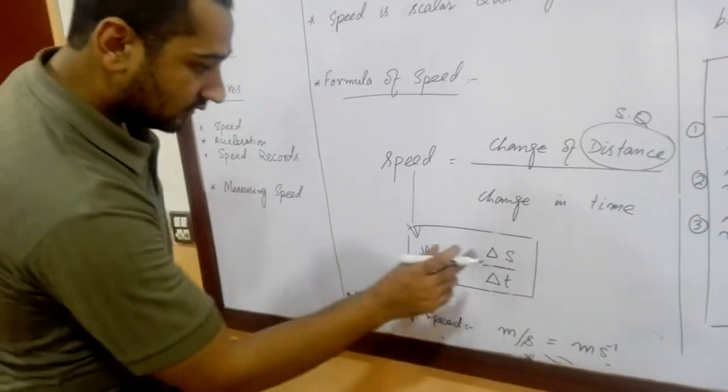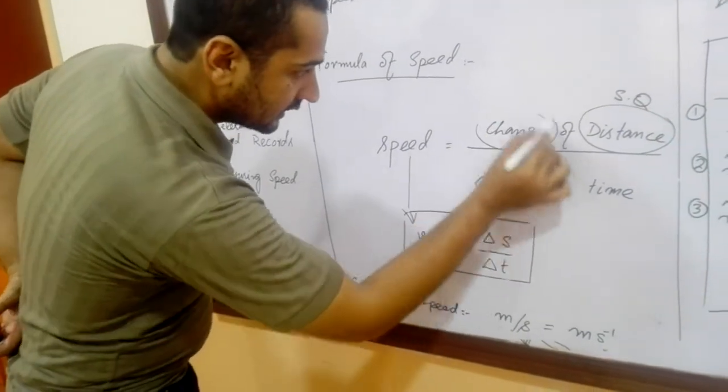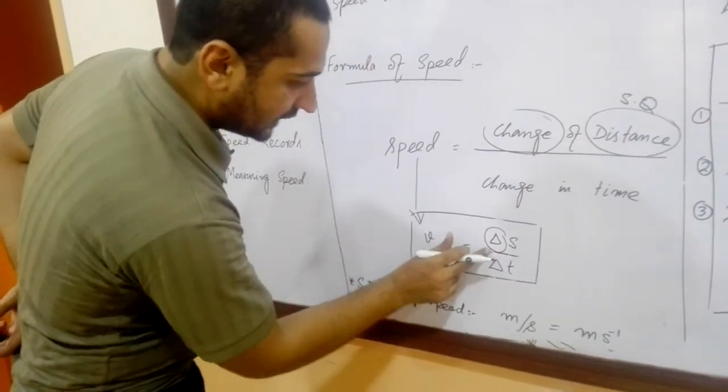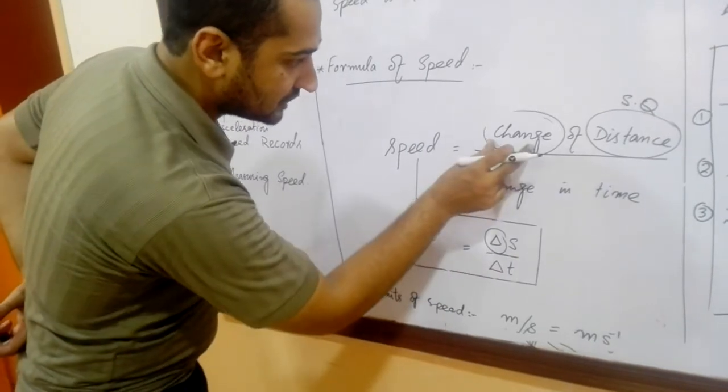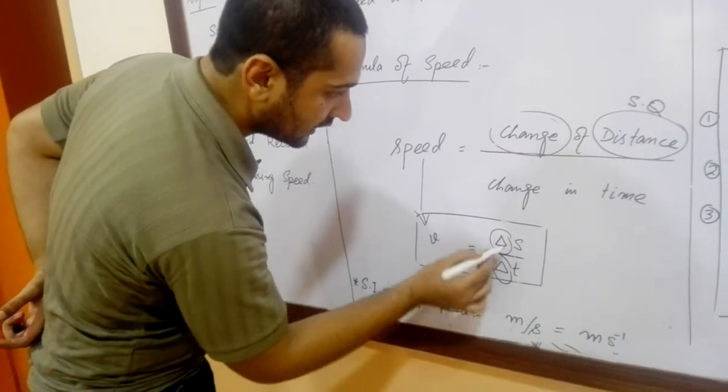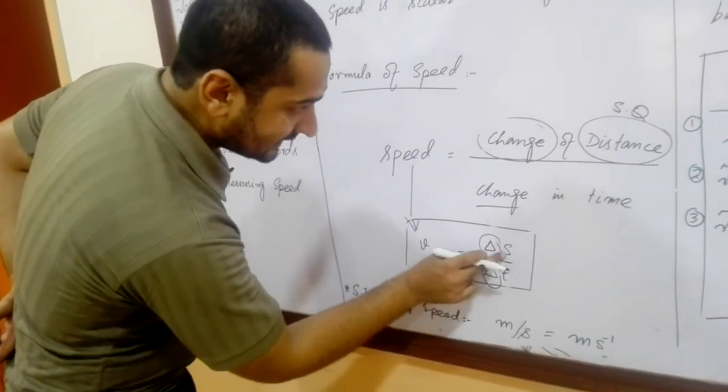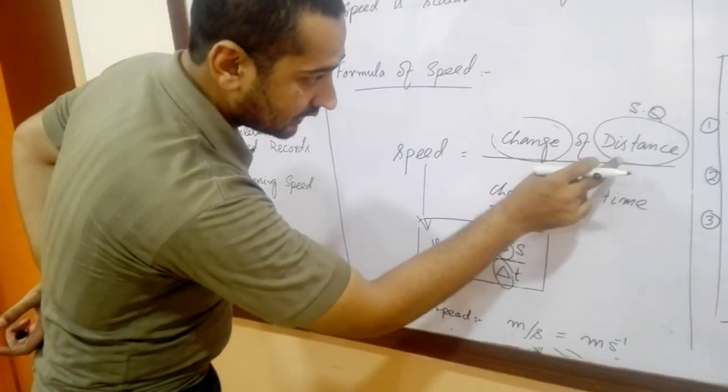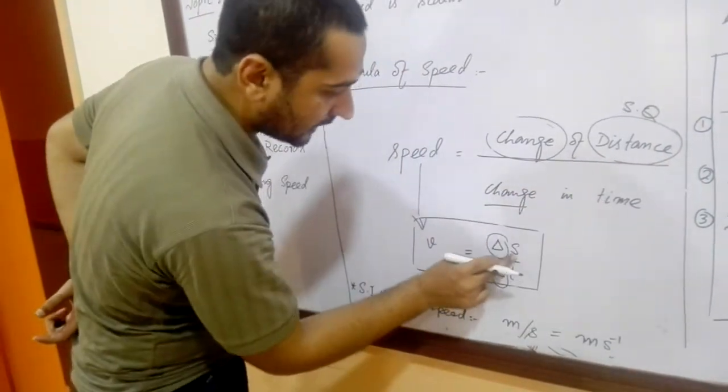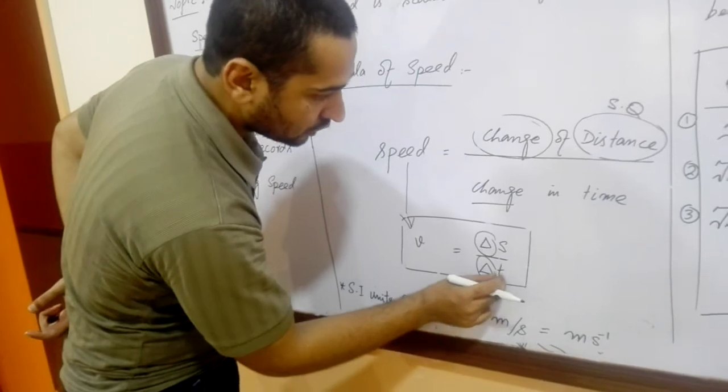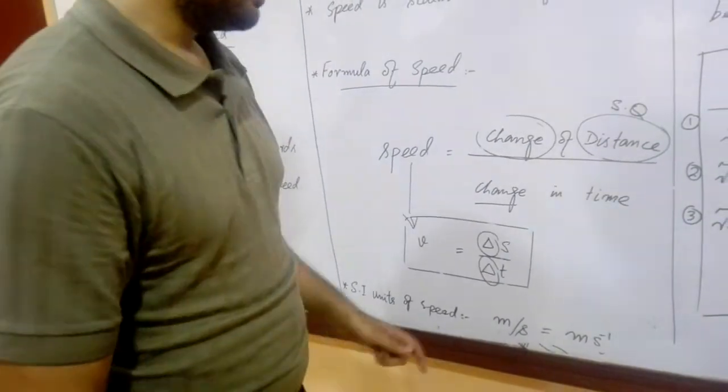And here this is the delta. Delta shows the change. And s is represented—distance is represented by s, and t shows the time.